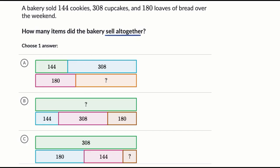So they're giving us the different items. So we have cookies, we have cupcakes. Let me do that in a different color, I'll do this in blue. We have the cupcakes, and then we have the loaves of bread.